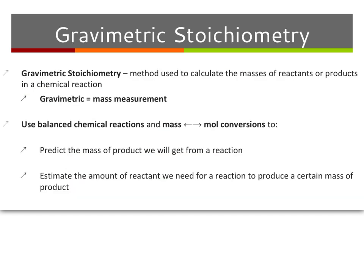Gravimetric stoichiometry is a method that we're using to calculate an unknown mass. It's either going to be the mass of the reactant or the product that we're looking for. Gravimetric just means mass measurement.